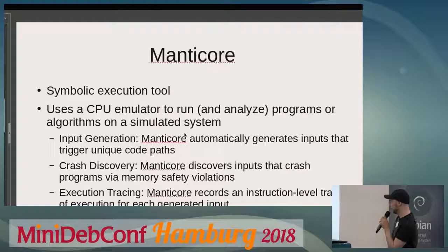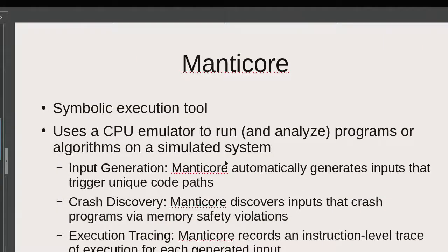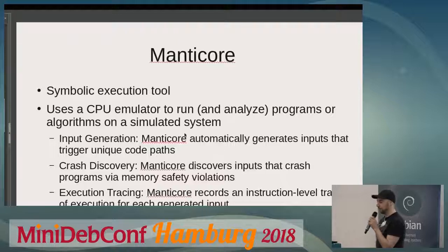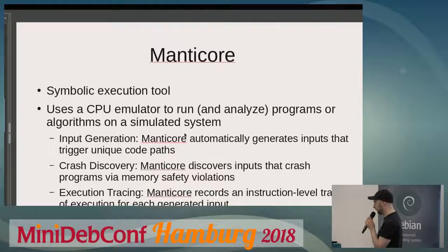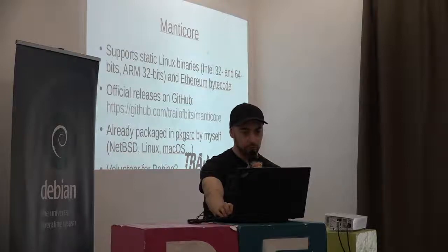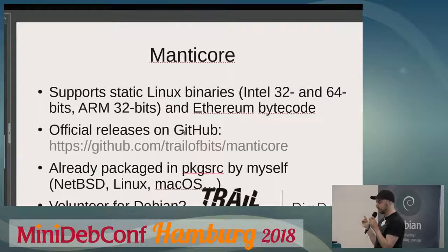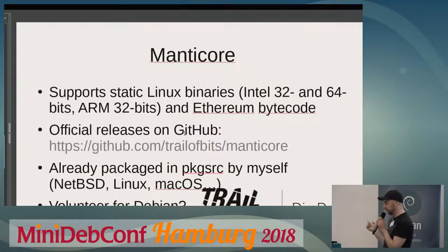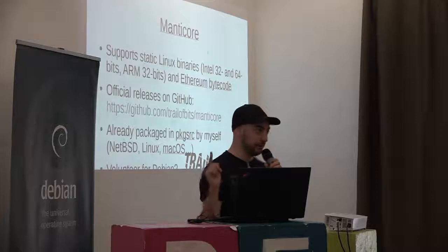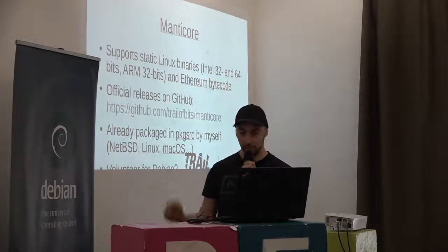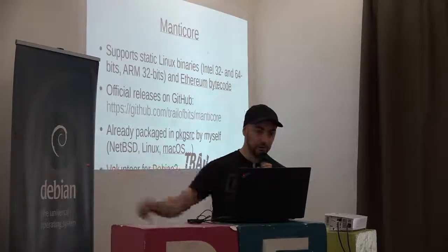I'd like to talk about Manticore today. It's a symbolic execution tool — it uses a CPU emulator, which can be hardware-assisted, to run and analyze programs or parts of programs on a simulated system. One of the aims is to make them crash: to do extensive fuzzing very efficiently by tracing instructions and understanding what's going on inside the program. It supports static Linux binaries in 32-bit and 64-bit modes, and also ARM 32-bit. Support is ongoing for ARM 64-bit and it also works with Ethereum bytecode. There are official releases on GitHub. It's already packaged in Packaging Source by myself, and I'm looking for volunteers to package it for Debian or help me do so. I'm sponsored by Trail of Bits, the developer of Manticore, to work on this.